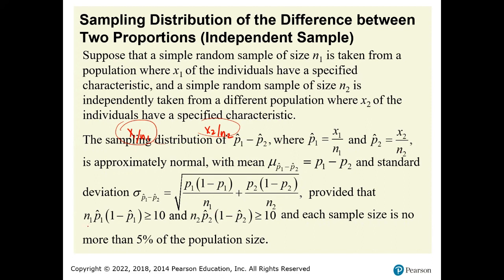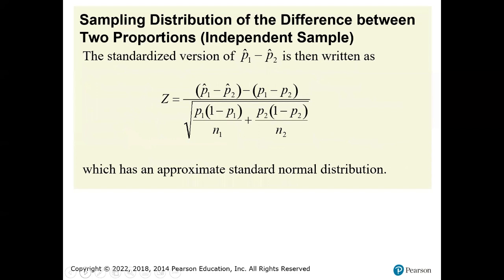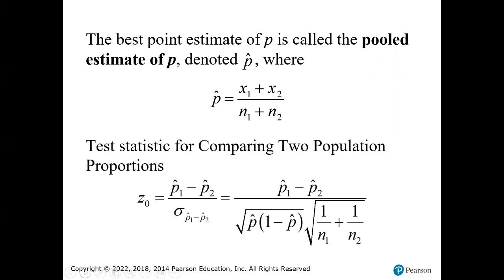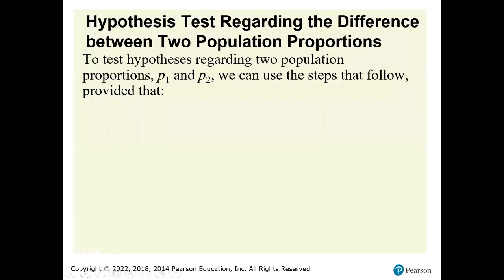This is provided that N times P times 1 minus P is greater than 10 for both samples, and each sample is no more than 5% of the population. Every problem I give you, this is automatically going to work. The best point estimate of P is called the pooled estimate, denoted P-hat, where you take X1 plus X2 all over N1 plus N2. We won't be doing any of these calculations by hand.